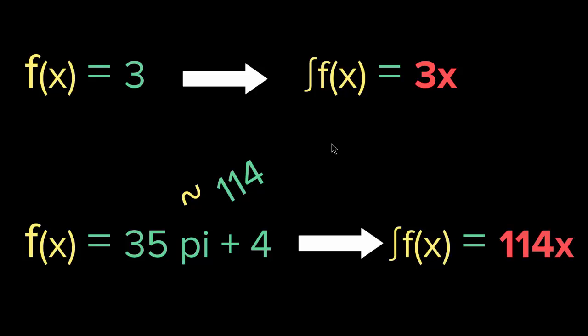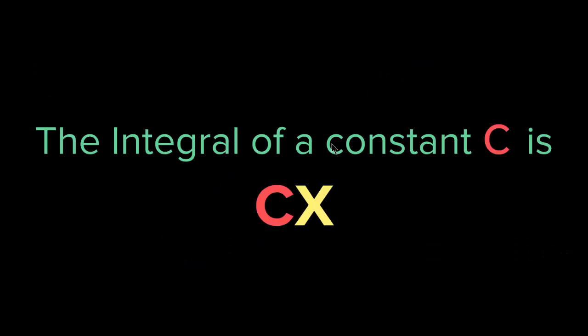The integral of this is 114x. You basically just multiply it by x. So the integral of a constant c is the constant times the variable that you are integrating in respect to.